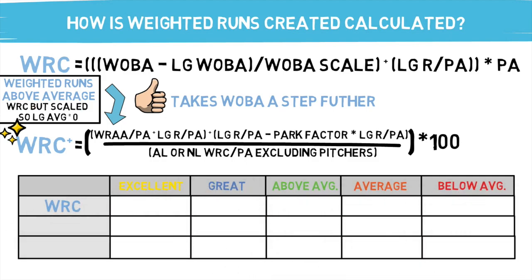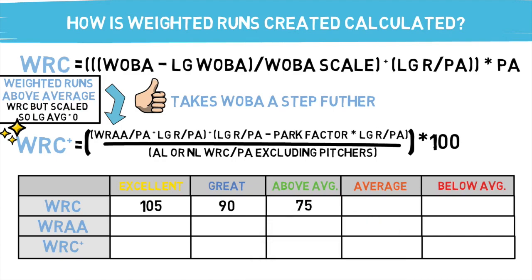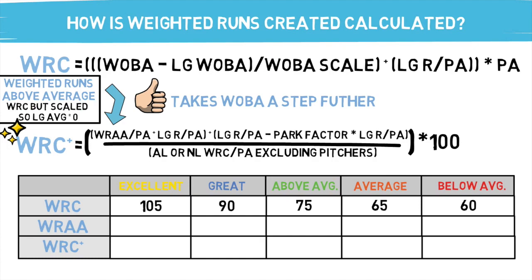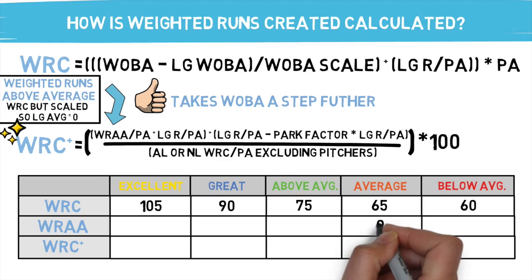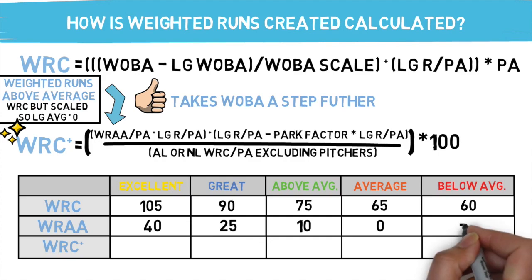To help paint a picture of these three stats, let's take a look at the typical ratings across them, starting with weighted runs created. Your excellent category is going to fall above 105, great at 90, above average at 75, average at 65, and below average at 60. The higher the number, the better. Weighted runs above average is the same exact thing as weighted runs created, but it's scaled so the league average falls at zero. So as you go up from there, you see improvement among the players. Positive is going to be better, and the further you get from zero, the better the player has done. Below average players are going to fall into the negative range.